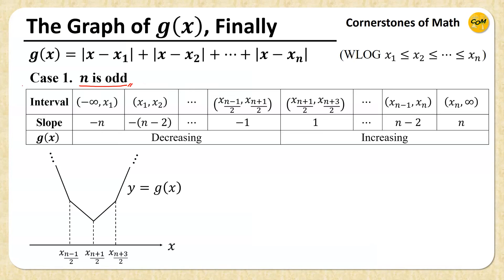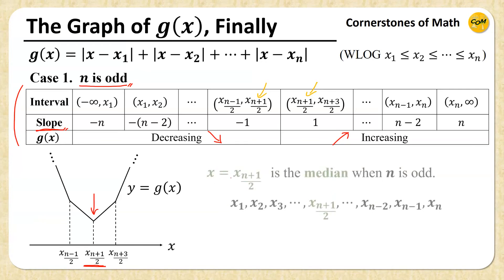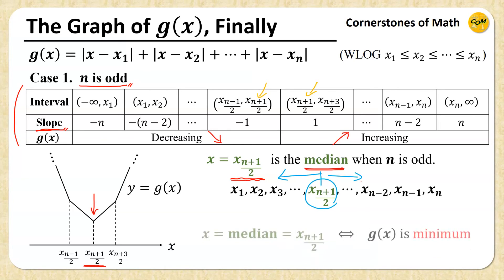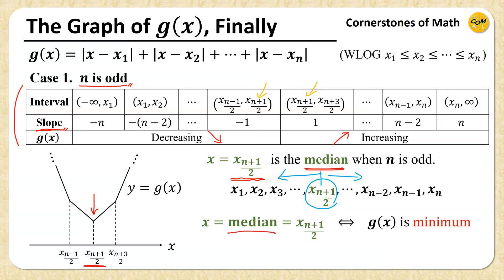When n is odd, g(x) first decreases then increases, having a minimum value right at the middle point x = x₍ₙ₊₁₎/₂. This x₍ₙ₊₁₎/₂ is also the median of the given n numbers when n is odd — if we arrange the values in increasing order, it is located right in the middle, leaving an equal number of values on the left and on the right. Therefore, g(x) is minimum if and only if x equals the median.